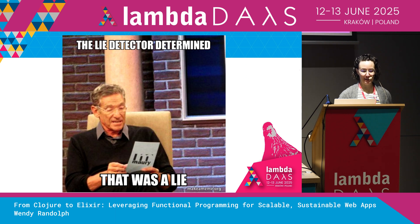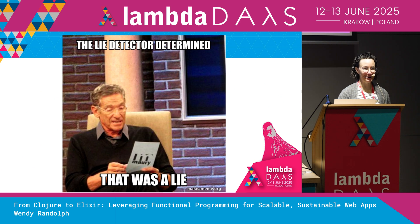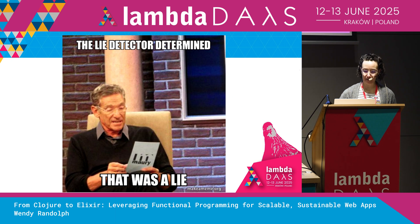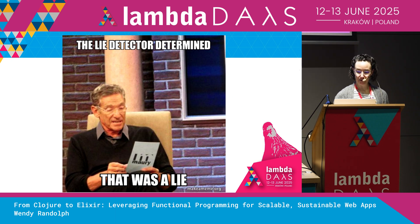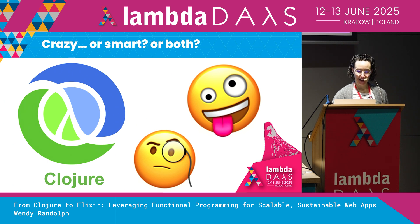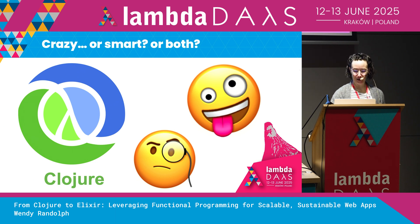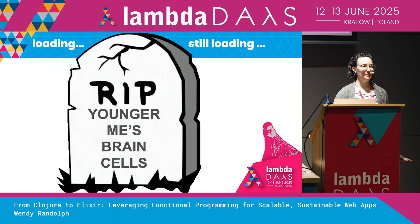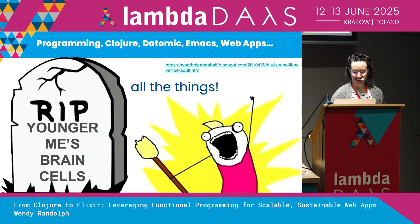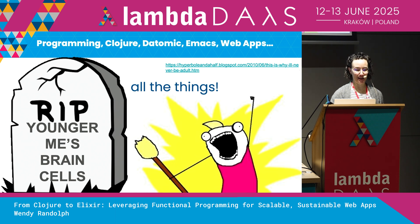So in my abstract, I said I would show you the exact same web app in both languages. Well, that was a bit of a lie. I will show code examples from two related apps: a simple Clojure CRUD app that I built called Fabric Stash and the Elixir Phoenix upgrade that I'm working on. If you didn't already know, I am a crazy person — I decided on Clojure as my first programming language. Moment of silence for younger me's brain cells. At that same time, I was learning Emacs and Atomic and how to build web apps. It was a lot all at the same time, but it was a good time.